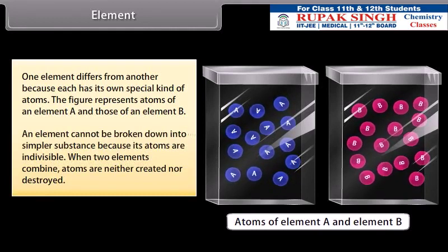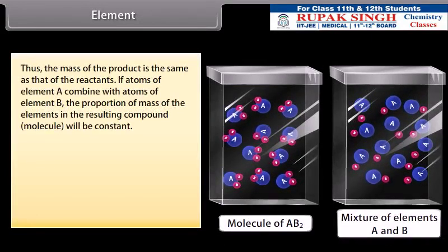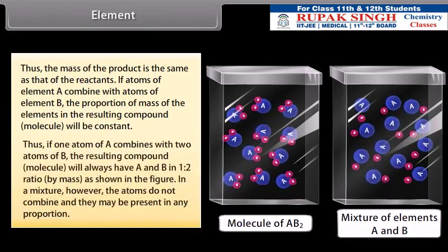An element cannot be broken down into simpler substance because its atoms are indivisible. When two elements combine, atoms are neither created nor destroyed. Thus, the mass of the product is the same as that of the reactants. If atoms of element A combine with atoms of element B, the proportion of mass of the elements in the resulting compound molecule will be constant. Thus, if one atom of A combines with two atoms of B, the resulting compound molecule will always have A and B in 1 to 2 ratio by mass. In a mixture, however, the atoms do not combine and they may be present in any proportion.